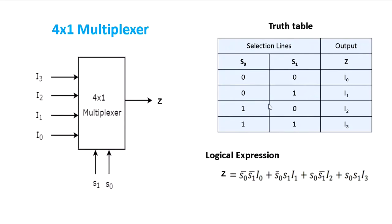From the truth table, we can write the logical expression. The output z equals: first combination — s0_bar AND s1_bar AND i0; second combination — s0_bar AND s1 AND i1; third combination — s0 AND s1_bar AND i2; and similarly the fourth combination — s0 AND s1 AND i3.